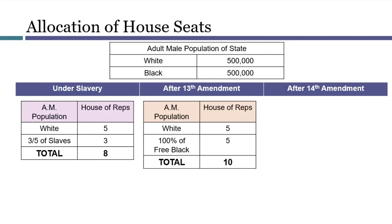When the 13th Amendment ended slavery, it also ended the Three-Fifths Compromise. This would mean that the former slave state would actually increase its representation in the House, from eight members to ten members. Now, this result would be fine if the newly freed population was allowed to vote, but the former slave states were quickly moving to stop them from doing so. This is what gave rise to Section 2 of the 14th Amendment.